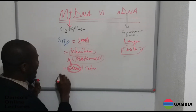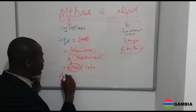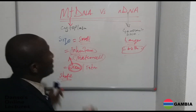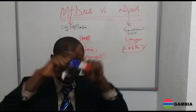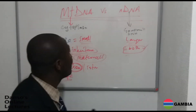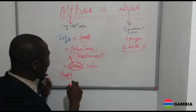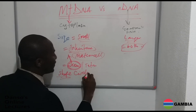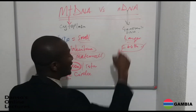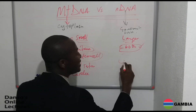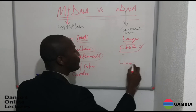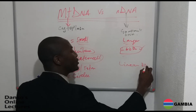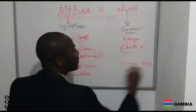Now looking at the shape of these two DNAs: mitochondria DNA is a circular form of DNA with different control regions, while nuclear DNA is a linear form of genomic DNA.